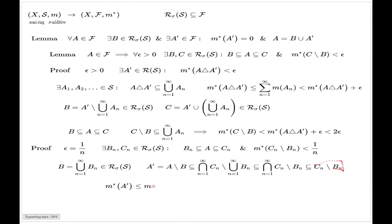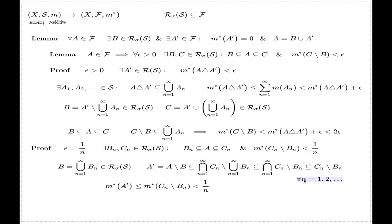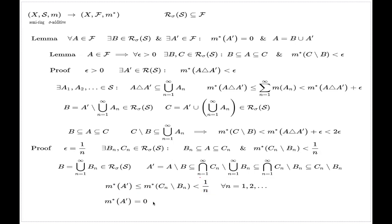Using the properties of the external measure, M*(A') is controlled by M*(Cn \ Bn), which is controlled by 1/n by construction. This is true for every n = 1, 2, 3, and so on. A number independent of n that is less than every fraction 1/n can only be zero. That finishes the proof of the lemma. We constructed B, which is a set from the minimal enveloping sigma algebra, such that the original A is the union of B and an extra set A', and the measure of A' is zero.